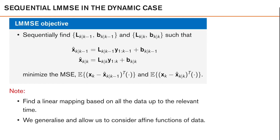Before we looked at the LMMSE estimator in the static case. If we expand this to the dynamic case, where we sequentially want to find matrices and vectors such that the prediction and posterior estimates minimize the MSE, we should note that these linear mappings are based on all data up to the relevant time index — all data up to time k-1 for the prediction, and all data up to time k for the posterior. This is technically an affine function of data: a linear mapping plus some constant b.